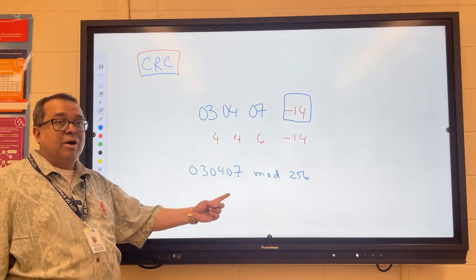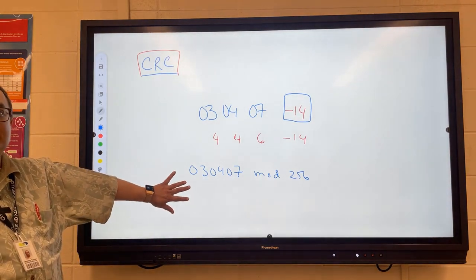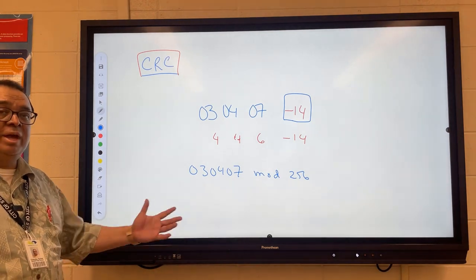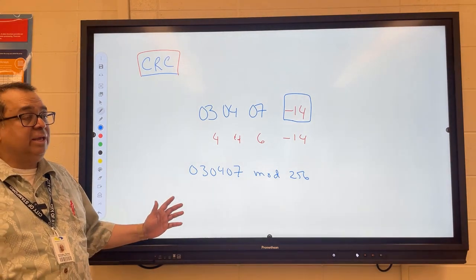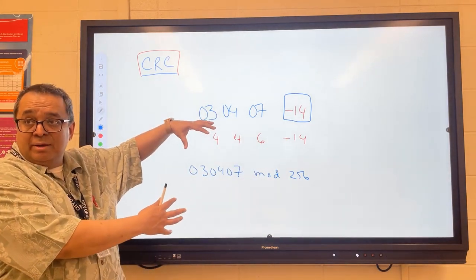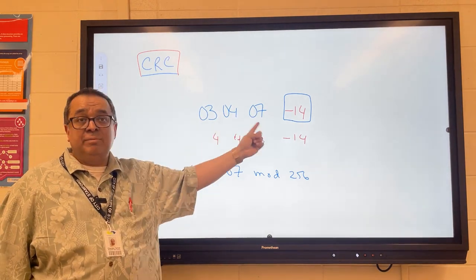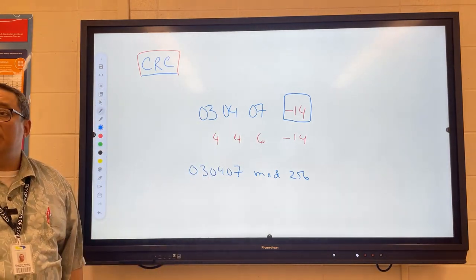Because this math is going to be harder for you to do, I'm not going to test you on this the next time we're together. The quiz will only have the parity, which was the one I started off with. Remember, we had the grid and you had to figure out which bit was bad? And the other one would be the checksum using this kind of scheme. So those are the only two you're going to be quizzed on.